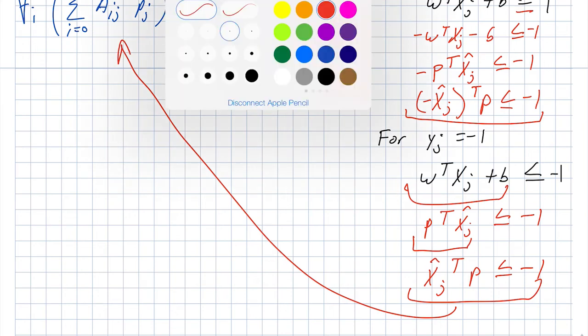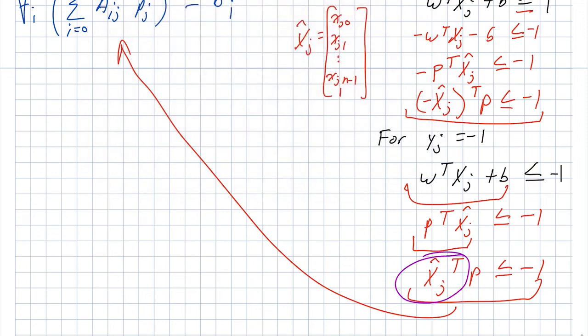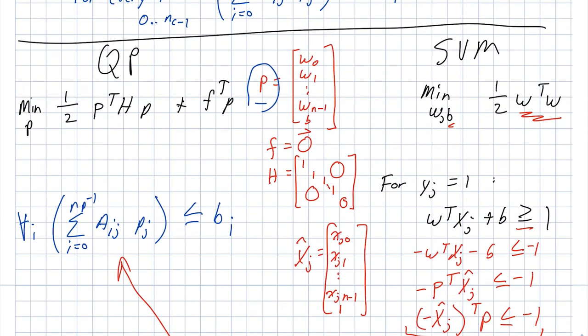So now we've transformed our support vector machine formulation into the standard QP form. And at this point, what we can do is hand our problem off to a standard QP solver, and it will go off and do its job. So next up, we're going to start talking about the next pieces of support vector machines. And in particular, we want to start talking about nonlinear transformations that are possible.